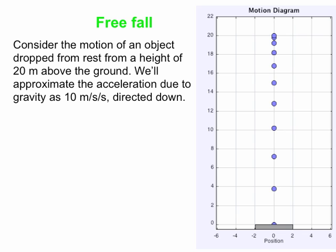Why does it accelerate downward? Because the Earth is attracting it via the force of gravity — there's an attractive interaction between our object and the Earth, and the object heads toward the center of the Earth. That force is approximately constant when we stay relatively close to the surface of the Earth. On the motion diagram, the dots are getting further and further apart as time goes by, which is consistent with constant acceleration — the speed is increasing at a constant rate.